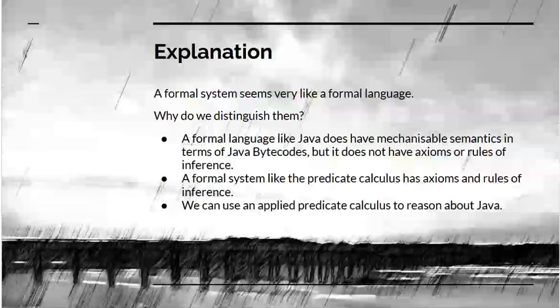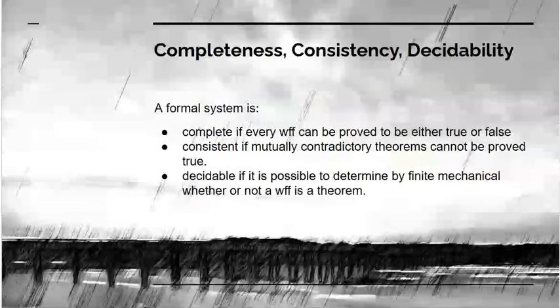The debate around Gödel focuses on completeness, consistency and decidability. We say a formal system is complete if every well-formed formula can be proved to be either true or false. It is consistent if you can't prove two mutually contradictory theorems. And it's decidable if it's possible to determine by finite mechanical means whether or not a well-formed formula is a theorem. The first two points are relevant to Gödel, the last point to Turing.